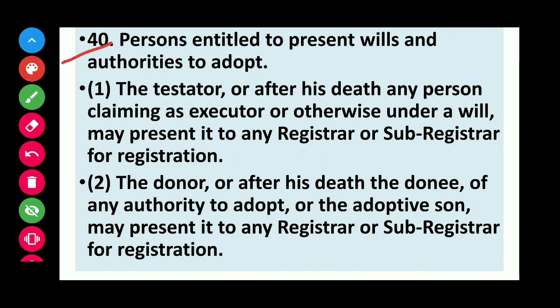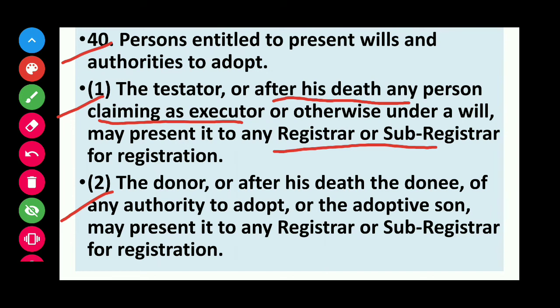Section 40 covers persons entitled to present wills and authorities to adopt. The testator, or after his death any person claiming as executor or otherwise under the will, may present it to any registrar or sub-registrar for registration. The donor, or after his death the donee of the authority to adopt, or the adoptive son, may also present it to any registrar or sub-registrar for registration.